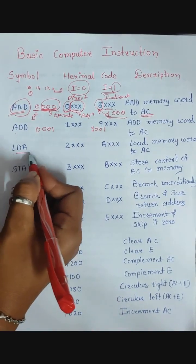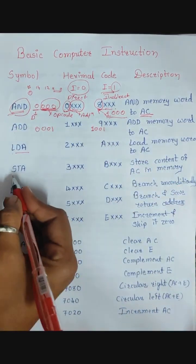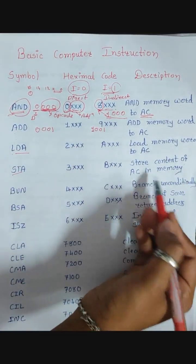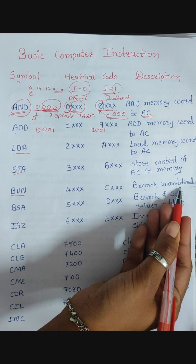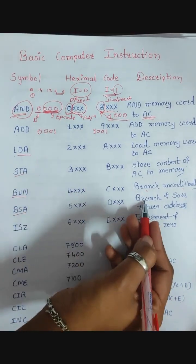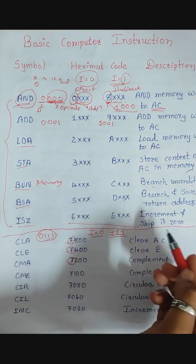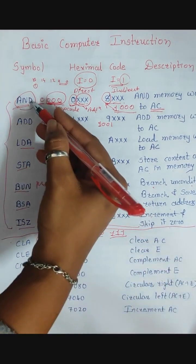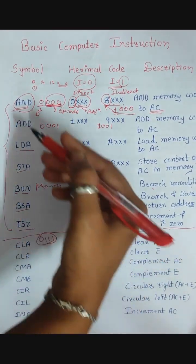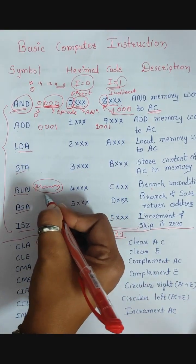LDA is used to load a memory word to the accumulator. STA stores the content of the accumulator in memory. BUN is branch unconditionally — used to jump to a particular location. BSA is branch and save return address. ISZ is increment and skip if zero. These seven instructions — AND, ADD, LDA, STA, BUN, BSA, and ISZ — are the memory reference instructions.